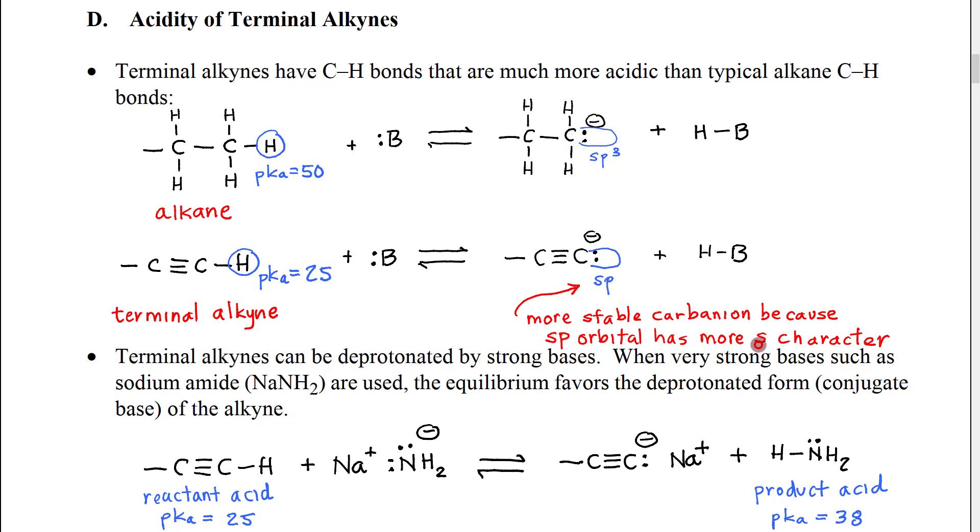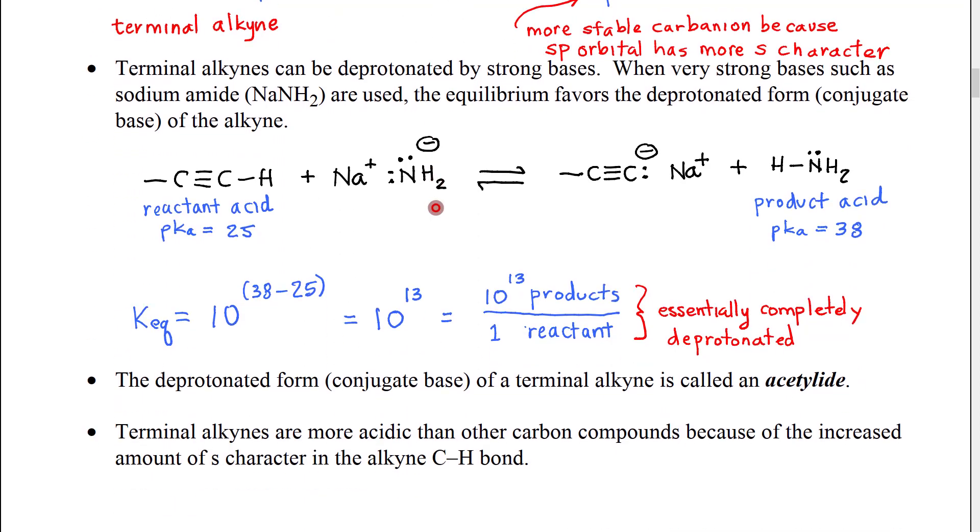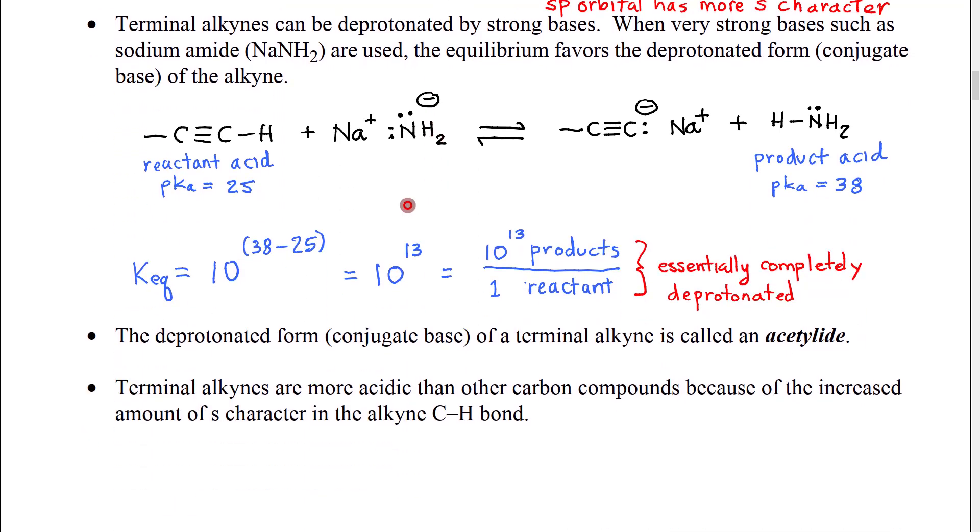Because the sp orbital has more s character, which pulls those electrons closer to the nucleus, and therefore their potential energy goes down, because they are closer to the positive charges in the nucleus.